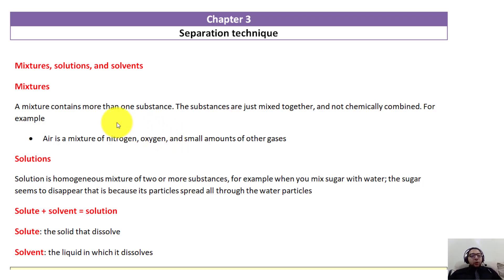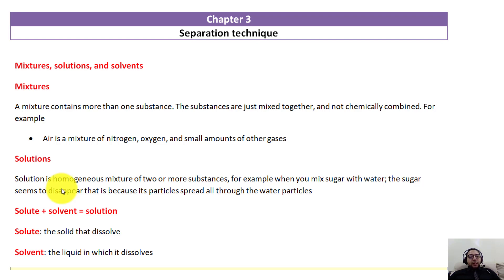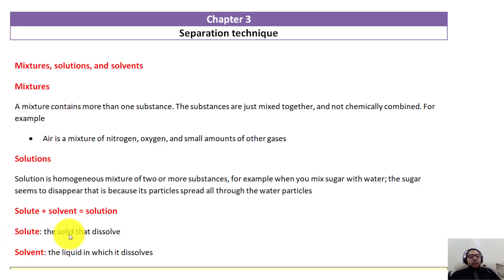A solution is a homogeneous mixture of two or more substances. For example, when you mix sugar with water, the sugar disappears in the water — that's what we call homogeneous, they act as one thing. A solution consists of two things: the first is called the solute, which is the solid that dissolves inside the liquid — in our example, that's the sugar — and the second is called the solvent, which is the liquid that dissolves the solute.